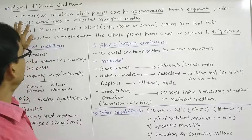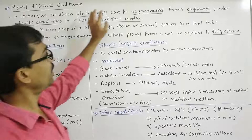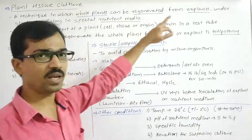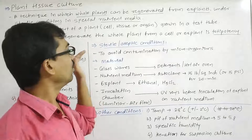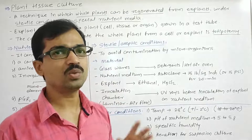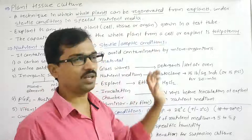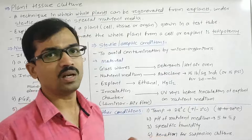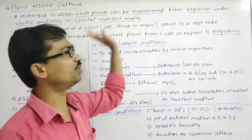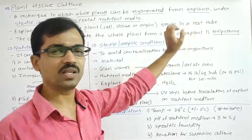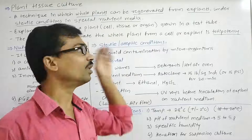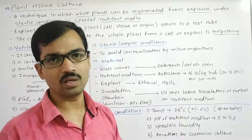In plant tissue culture, a key term is 'explant.' An explant is any part of the plant — a cell, tissue, organ, or plant part — that can be regenerated in a test tube, flask, or any glassware or plasticware used inside the laboratory. In tissue culture laboratories, plants can be grown in flasks, test tubes, or other types of containers.